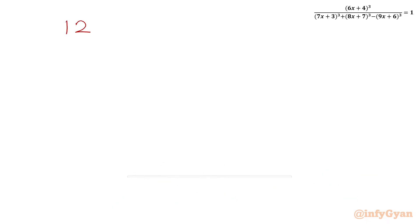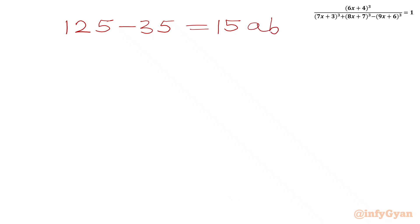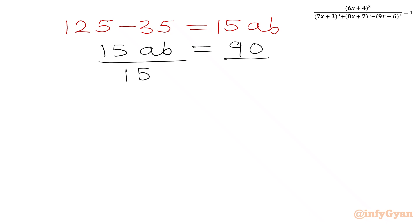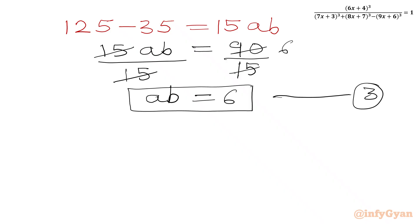Now we will take 35 to the LHS: 125 minus 35 equals 15 times ab. 125 minus 35 is 90, so 15ab equals 90. We can cancel and we get ab equal to 6.